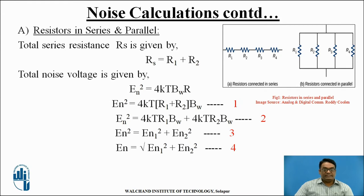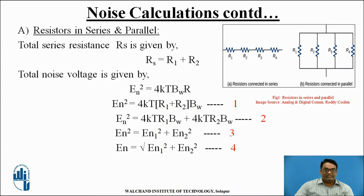The first method is resistors connected in series and parallel. The total resistance RS is given by RS = R1 + R2. The total noise voltage produced due to each resistance is given by EN² = 4KT × BW × R, where K is Boltzmann constant, T is temperature, BW is bandwidth, and R is the total resistance of the circuit.